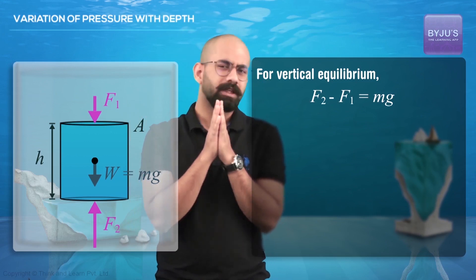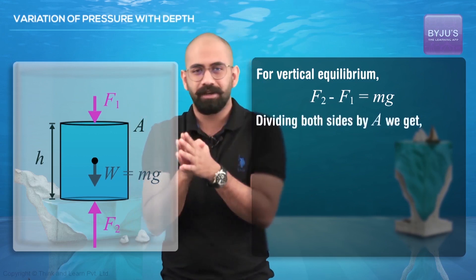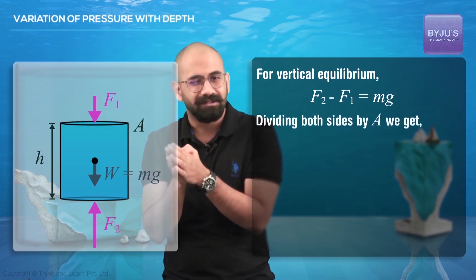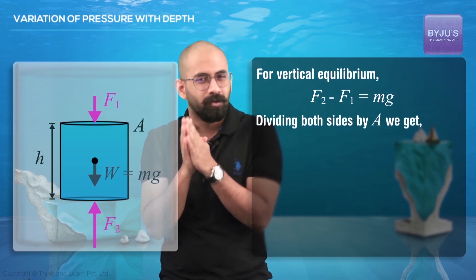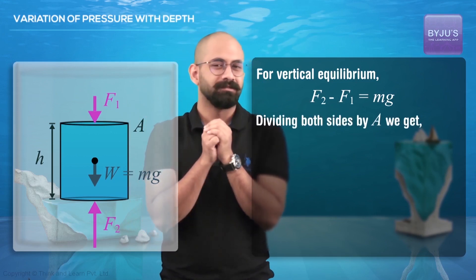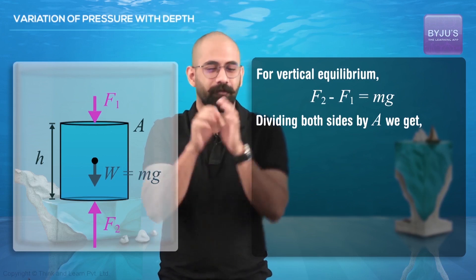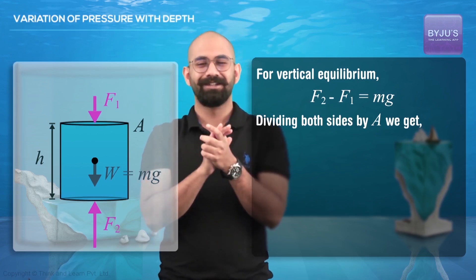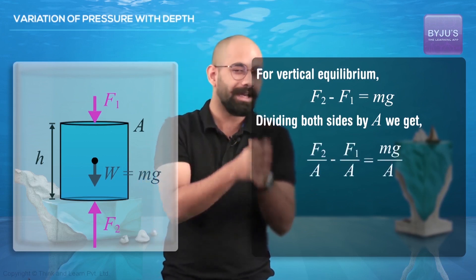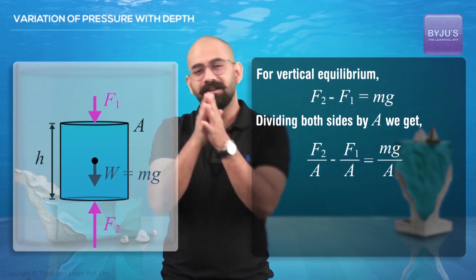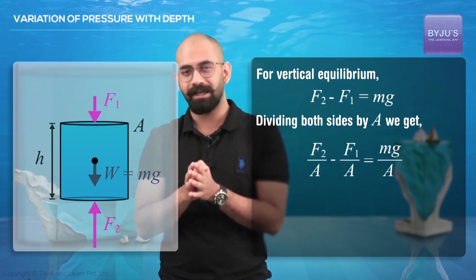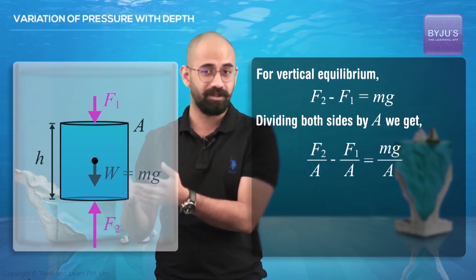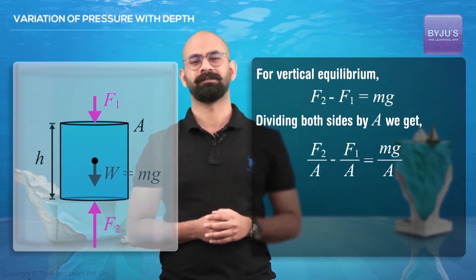Now, if I divide both sides by A — and if you're wondering why, just wait — if I divide it, I get F2/A minus F1/A equals MG/A.